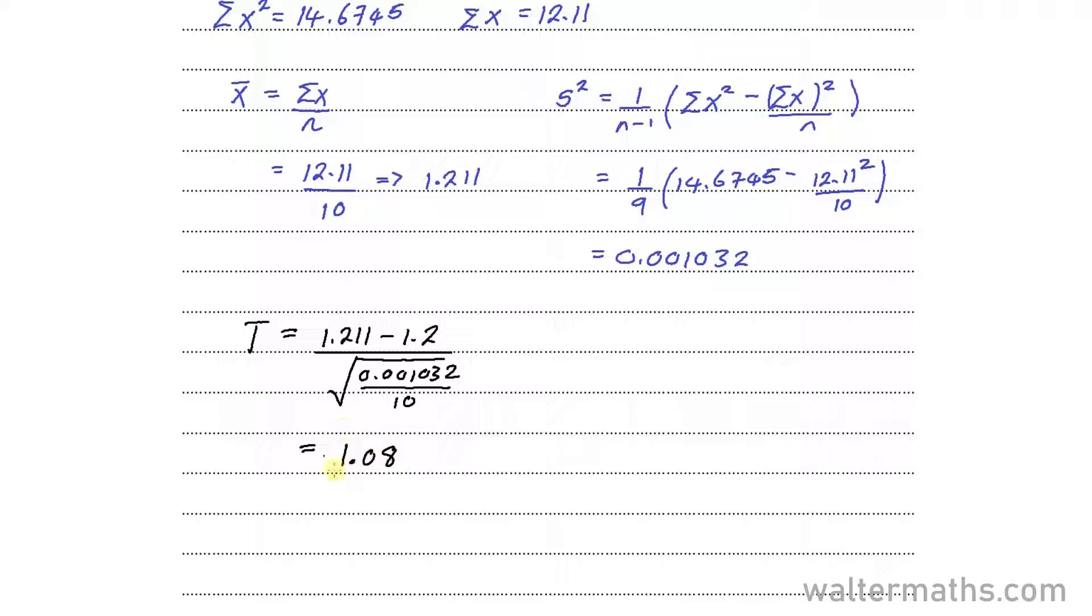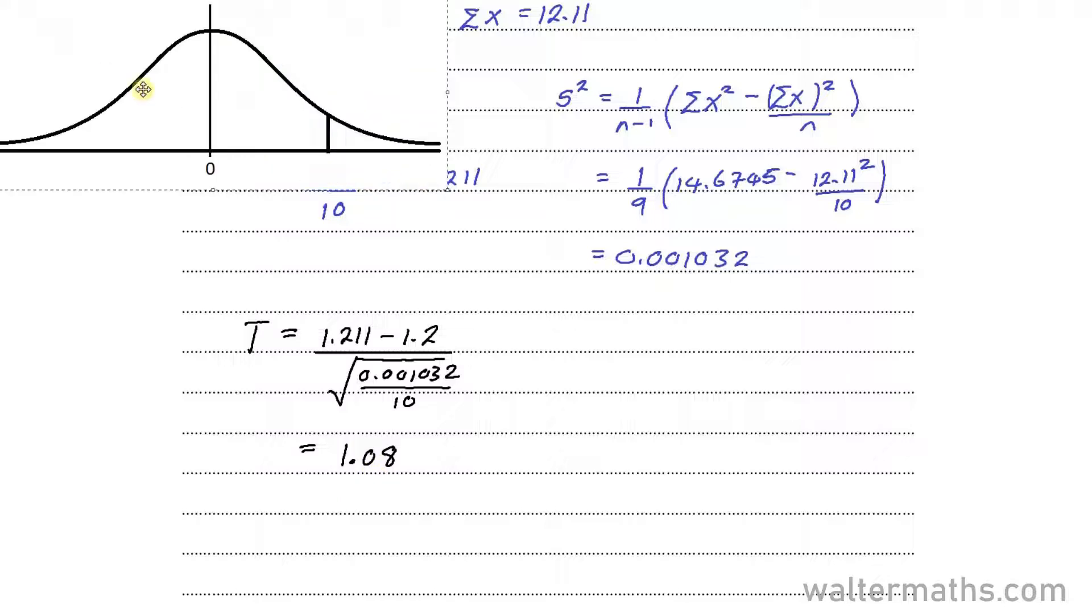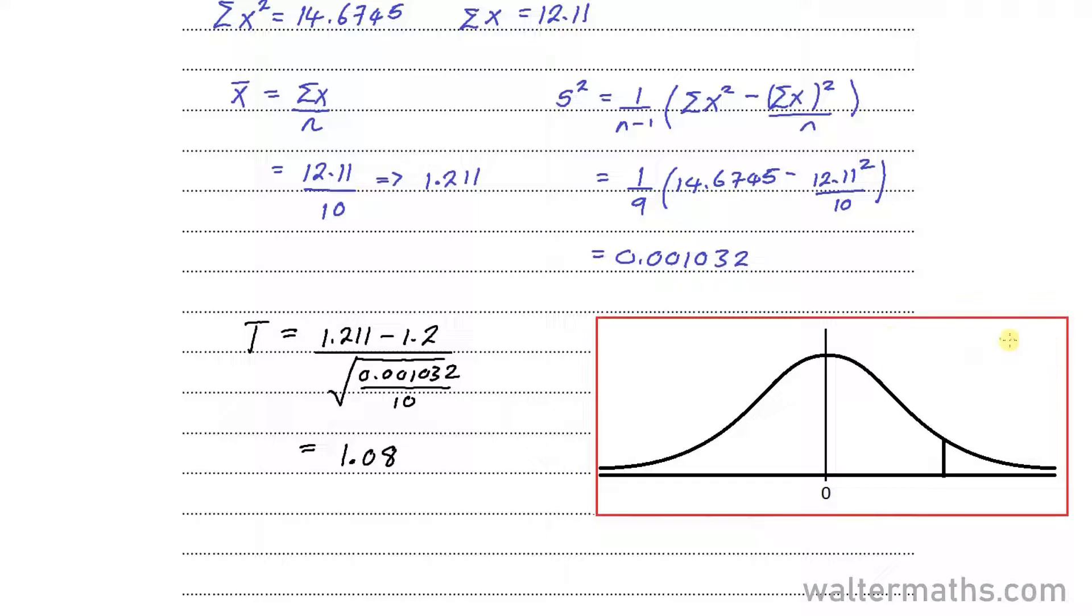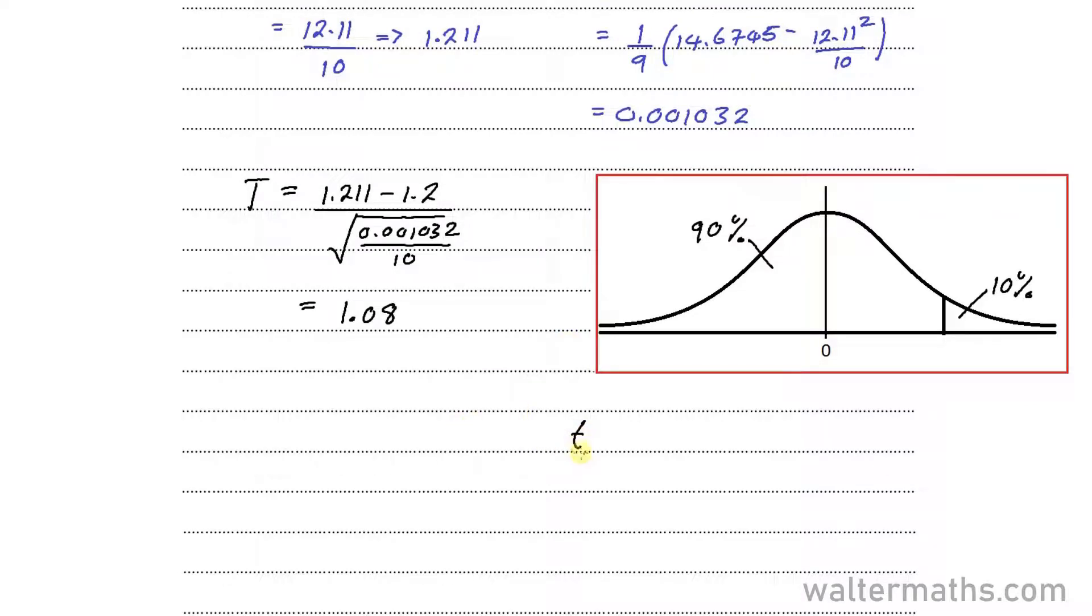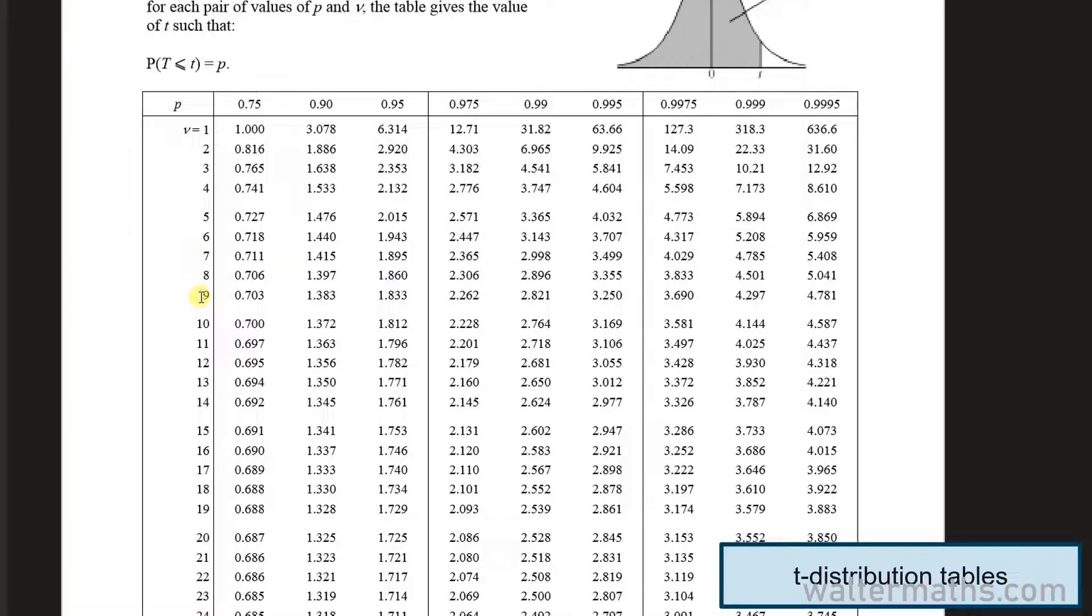We want to see where the test statistic T lies. Let us look at the graph. This is the T graph where since this test is being carried out at the 10% significance level, we know that the critical region is represented by 10%, so the acceptance region is represented by 90% of the distribution. We need to find the critical T value here. To get the critical T value, that's the T value at 9 degrees of freedom since n is 10, so the degrees of freedom will be 10 minus 1, that's 9. And that's for a p-value of 0.9.